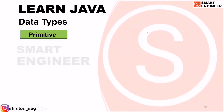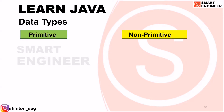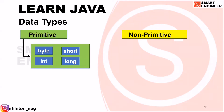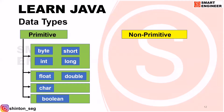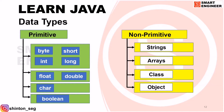Data types are of two types: one is primitive, and another one is non-primitive. In primitive data type, for storing numbers we will use byte, short, int, and long. For storing decimal numbers, we will use float and double. For storing characters such as A, B, C, D — individual letters — we will use char. And for storing true or false, we will use boolean. Non-primitive data types are user-defined data types, such as strings, arrays, class, object, and interface.